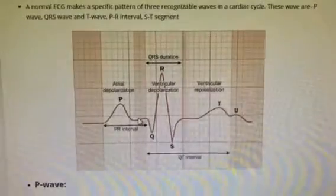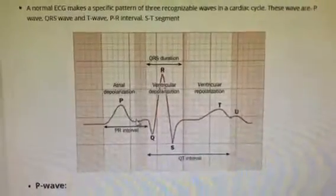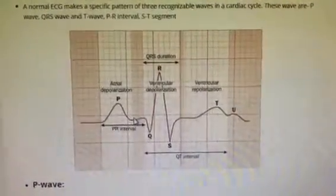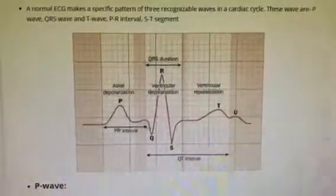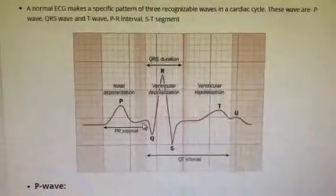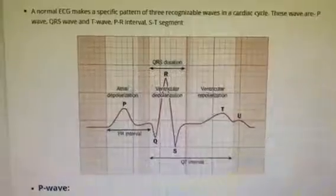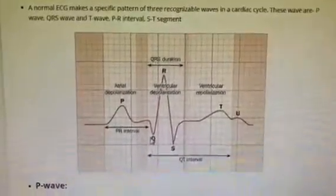Actually, atrioventricular node has a decremental response that is it has a rate related decrease in the conduction. If we increase the heart rate, the conduction through the AV node keeps on decreasing. That's how it maintains the actual physiological heart rate required for the heart.